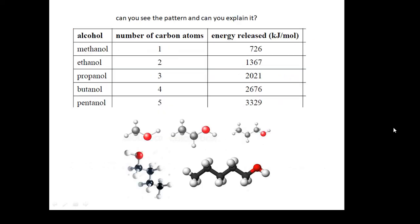Look at this table and remember this pattern. These are some different fuels. You'll notice that the different fuels have different numbers of carbon atoms in their molecules. The methanol just has one carbon atom. Ethanol has two. And then the energy released in kilojoules per mole. We've already talked about ethanol, but can you see what the pattern is? The pattern should be pretty obvious. And can you explain that pattern?